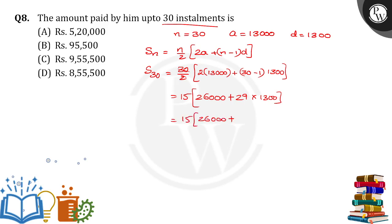What is the value? So we will have 37,700. So 15 into 26,000 plus 37,700 is equal to 63,700. By multiplying this value, we will get 9,55,500.